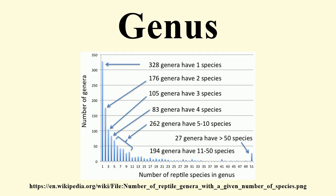Higher classifications. The type genus forms the base for higher taxonomic ranks, such as the family name Canidae based on Canis. However, this does not typically ascend more than one or two levels. The order to which dogs and wolves belong is Carnivora.